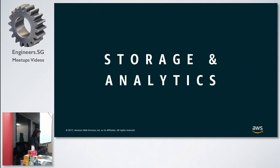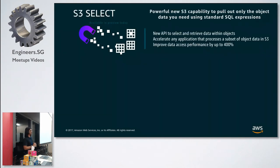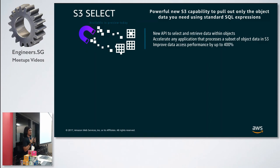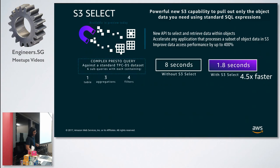Moving to storage and analytics: we announced S3 Select, a powerful new S3 capability to pull out only the object data that you need. Most customers use S3 for their data lake, and now with S3 Select you can query exactly the data you need using standard SQL expressions. It is 4.5x faster than without S3 Select. We also announced Glacier Select.